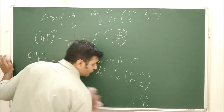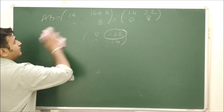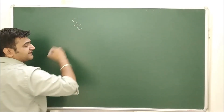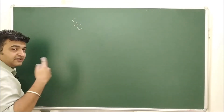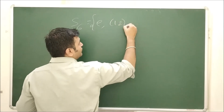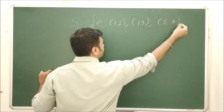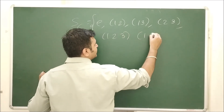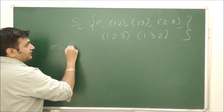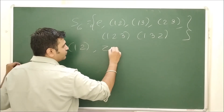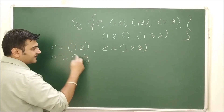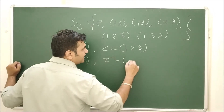In group theory I need a non-abelian group. The simplest one is S₃, the set of permutations on a triangle. It contains: E, (1 2), (1 3), (2 3), (1 2 3), and (1 3 2). Now take σ = (1 2) and τ = (1 2 3). Then σ⁻¹ = (1 2) since it has order 2, and τ⁻¹ = (1 3 2).